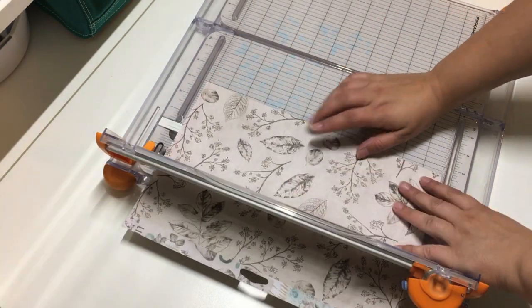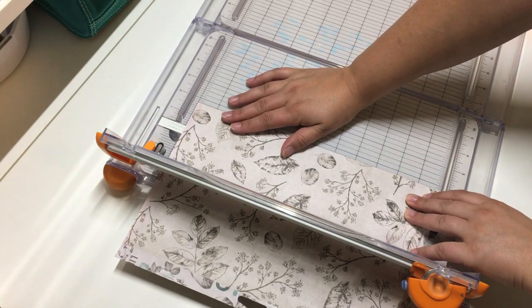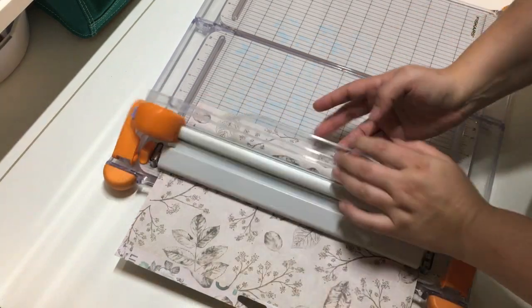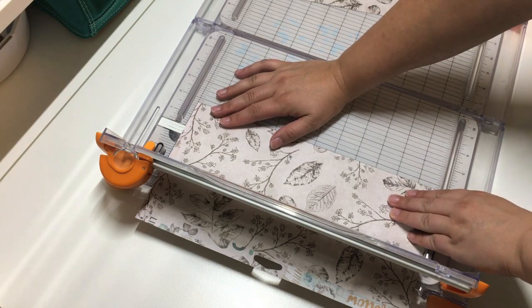I'm going to start by cutting a 1 3/4 inch strip. I would suggest cutting at least an inch and a half width just to make sure you have plenty of room for sewing. I'm going to do this twice because I'm going to show you two different types of pleats.